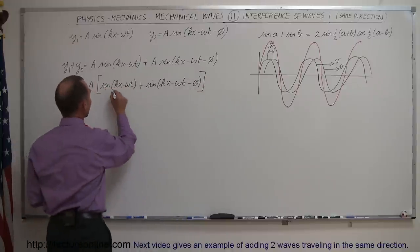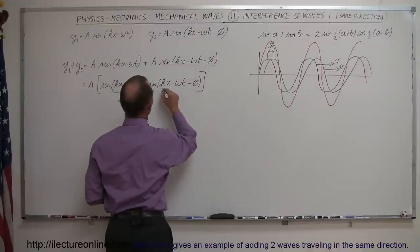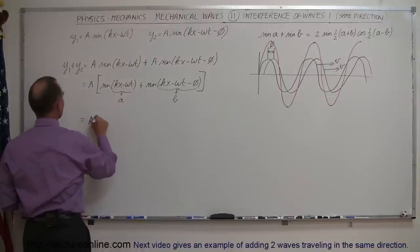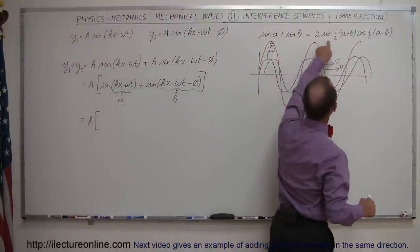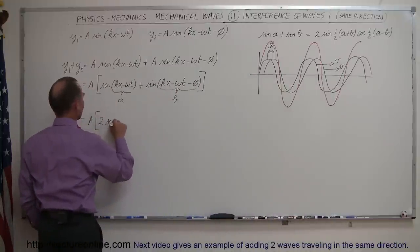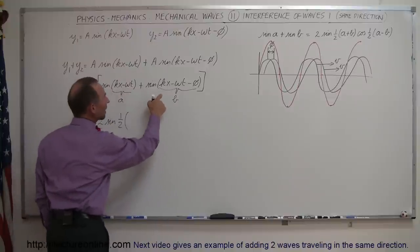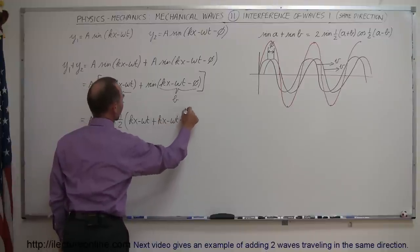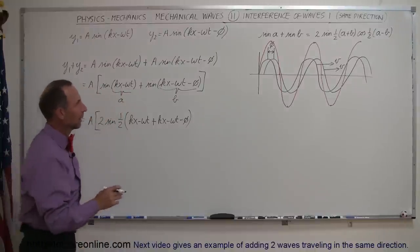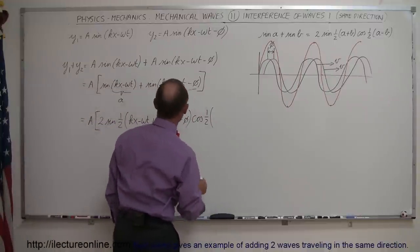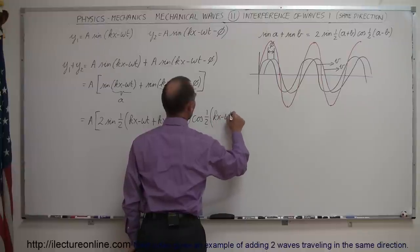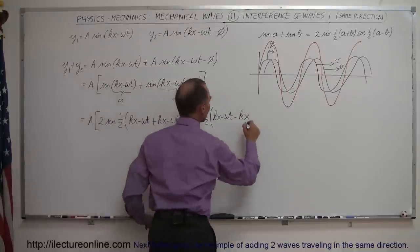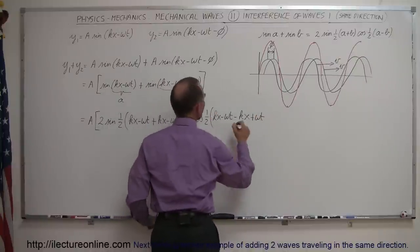Now I recognize that the first angle can be represented by the letter a, and the second angle by the letter b. Using the trig identity, sine a plus sine b equals two times the sine of half the sum times the cosine of half the difference. The sum of the two angles is: (kx minus omega t) plus (kx minus omega t minus phi). And the difference — taking a minus b — gives us (kx minus omega t) minus (kx minus omega t minus phi), which simplifies because the kx terms and the omega t terms cancel, leaving plus phi.